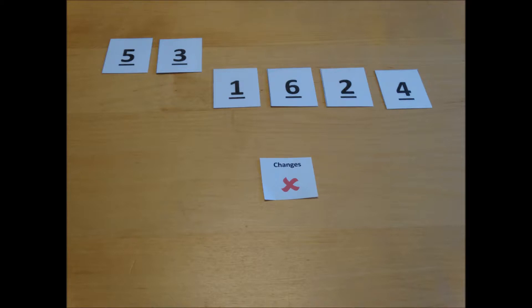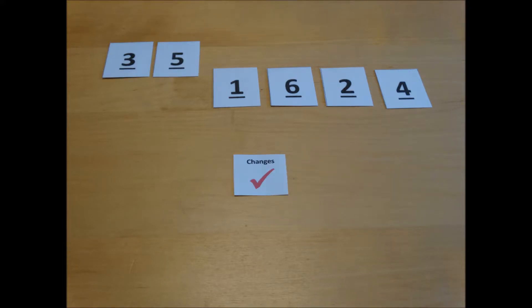Because 3 is lower than 5 we need to swap them around and put that first. We also need to alter the changes variable to yes because we've now made a change.